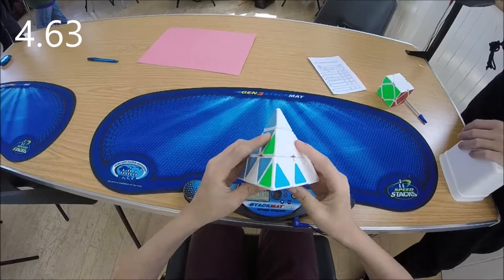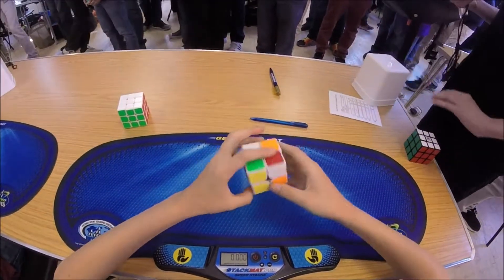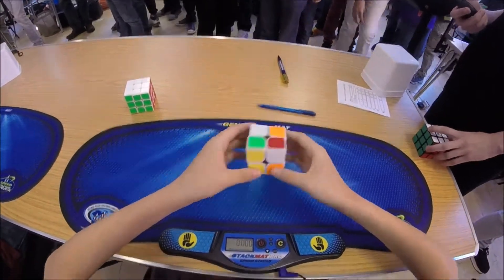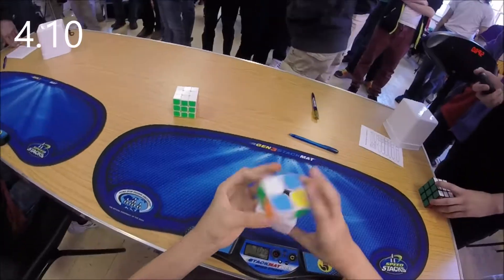This is my 2x2 solve and this was a competition PB, which is pretty good. And then this is my skewb. I actually had the same time for skewb twice.